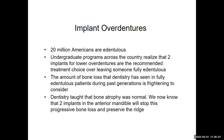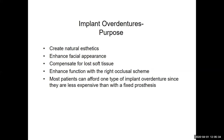20 million Americans are edentulous, and undergraduate programs recognize that two implants for lower overdentures are the recommended treatment choice. The amount of bone loss seen in fully edentulous patients during past generations is frightening. Dentistry once thought bone atrophy was normal; we now know that two implants in the anterior mandible will stop this progressive bone loss and preserve the ridge. Overdenture purposes include creating natural aesthetics, enhancing facial appearance, compensating for loss of tissue, and enhancing function with the right occlusal scheme.